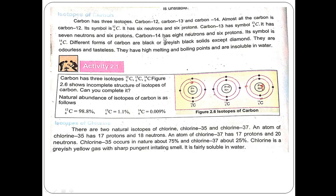Carbon has 3 isotopes: carbon-12, carbon-13, and carbon-14. For carbon-12 with mass number 12 and atomic number 6: number of protons = 6, number of electrons = 6, number of neutrons = 12 minus 6 = 6.